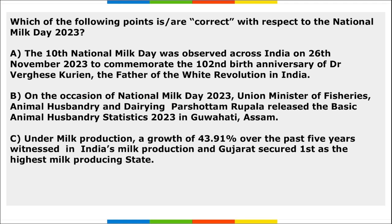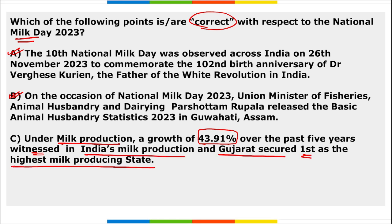Next: which of the following are correct with respect to National Milk Day? Options A and B are correct, but C is wrong. Option C incorrectly stated Gujarat secured first place as the highest milk producing state. Remember, it is Uttar Pradesh that secured the first position as the highest milk producing state, followed by Karnataka.